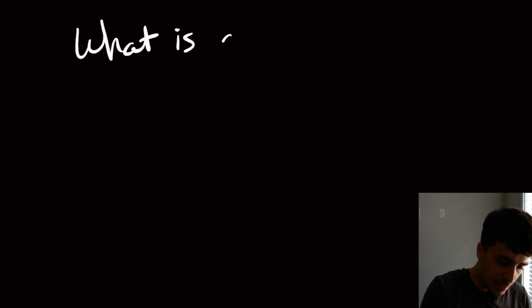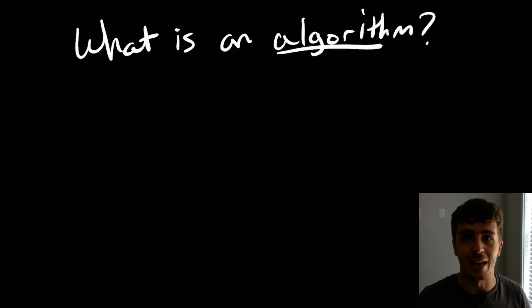So what is an algorithm? There's a really bad joke that algorithm is just a portmanteau of the word Al Gore and rhythm. But terrible joke aside, what is an algorithm? So what it really is, is a way of trying to accomplish some goal in an unambiguous way.